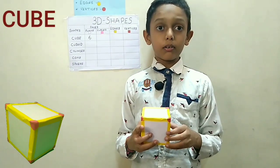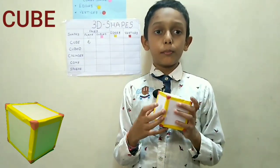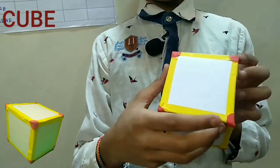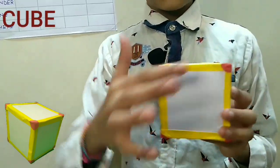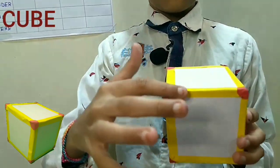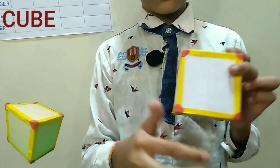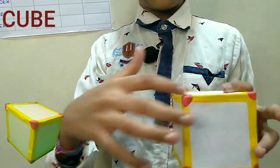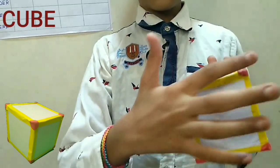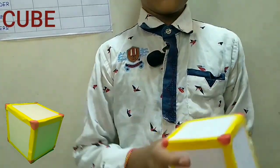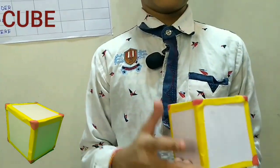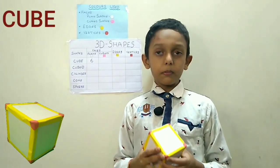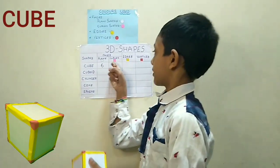Now we will count the edges of the cube. 1, 2, 3, 4, 5, 6, 7, 8, 9, 10, 11 and 12. So there are 12 edges in the cube. So we will write here 12.